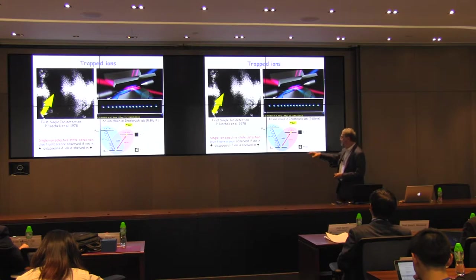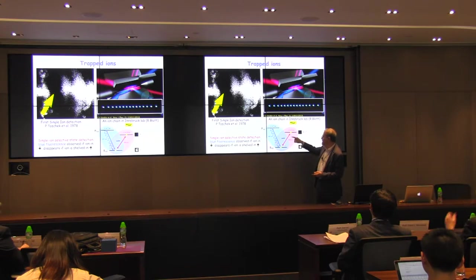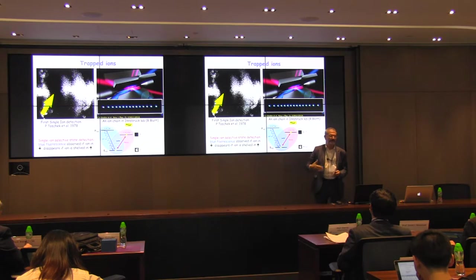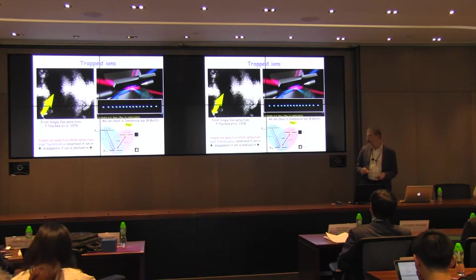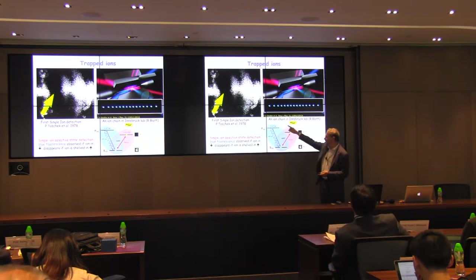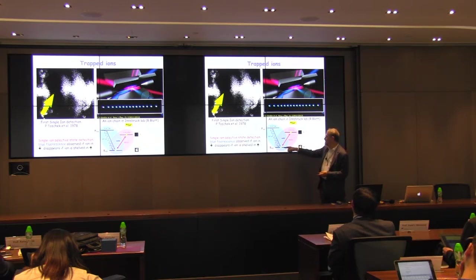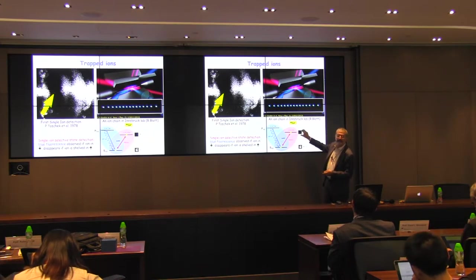The way the ions are detected is exactly the same technique as in optical pumping. You have three levels: a transition between the S and P states which is strongly allowed, driven with a very fast rate by the laser; and a very long metastable D state with a weakly allowed transition. These levels constitute a qubit for quantum information, or the levels of an atomic clock. If the atom is in the S state, it scatters a lot of light and you see a bright spot. If the atom is brought into the D state by absorbing a photon, this state no longer absorbs light and you have a dark spot.